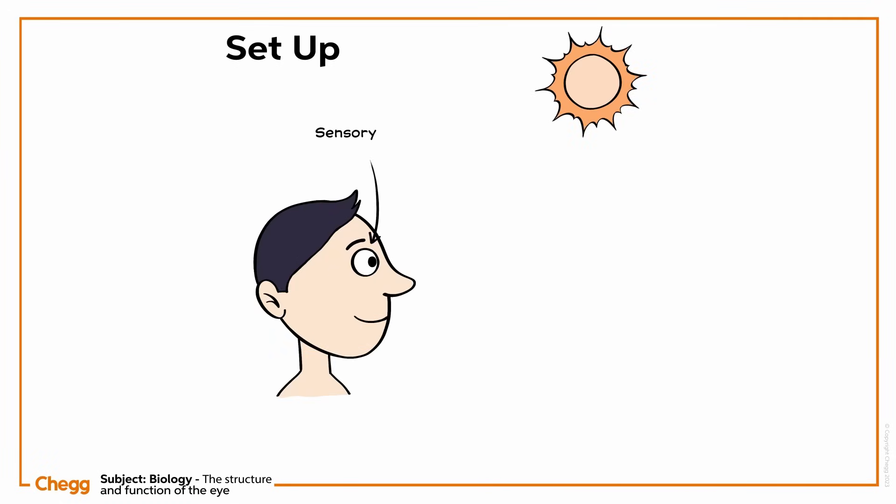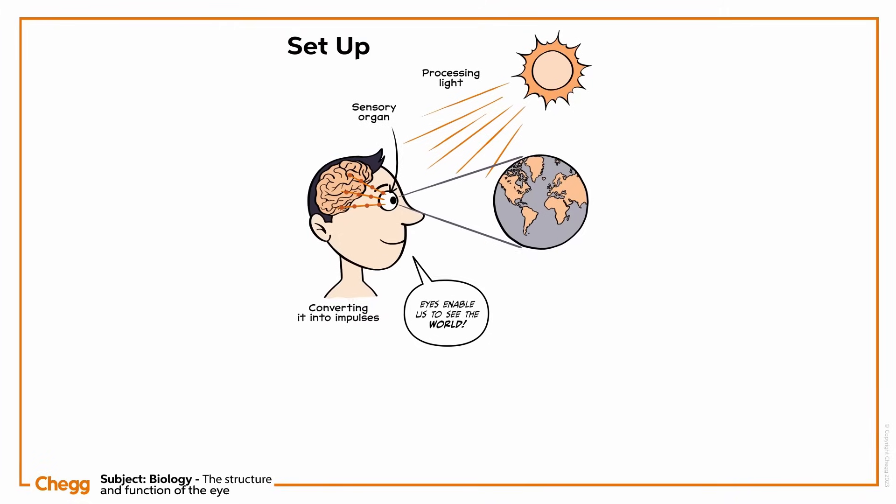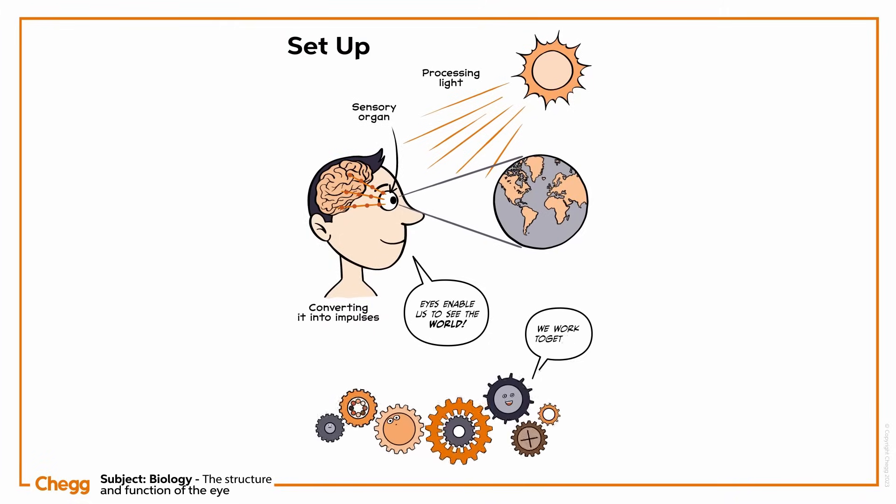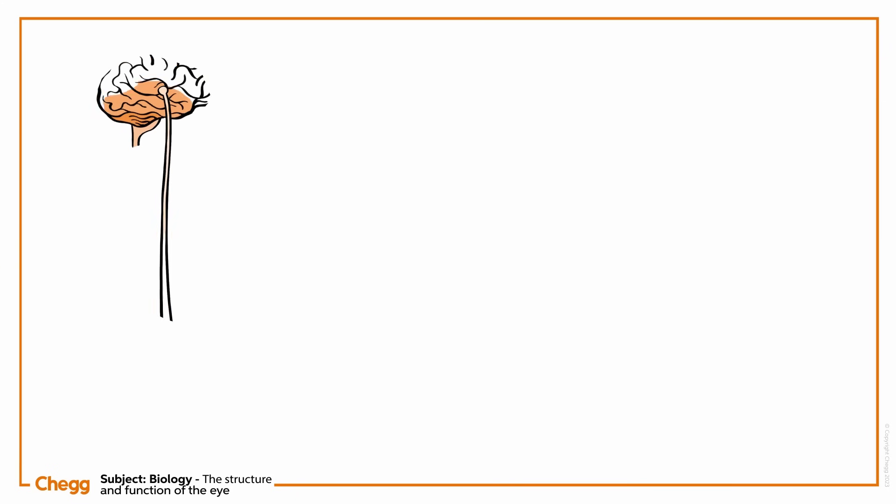The eye is a sensory organ. By processing light and converting it into impulses that our brains can understand, eyes enable us to see the world. To achieve this feat, many intricate parts work together. To figure out how an eye works, we'll begin with some anatomy.